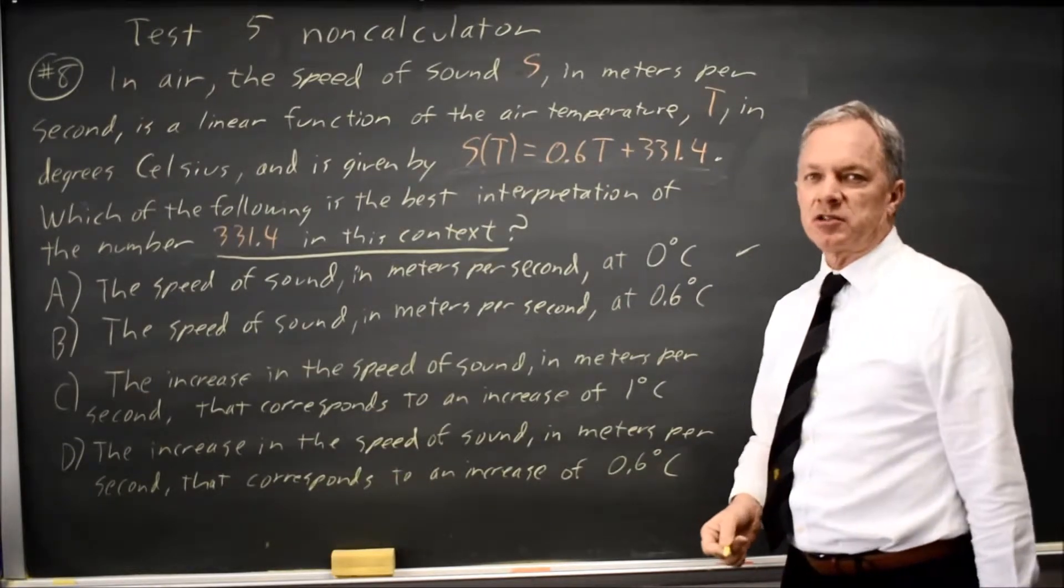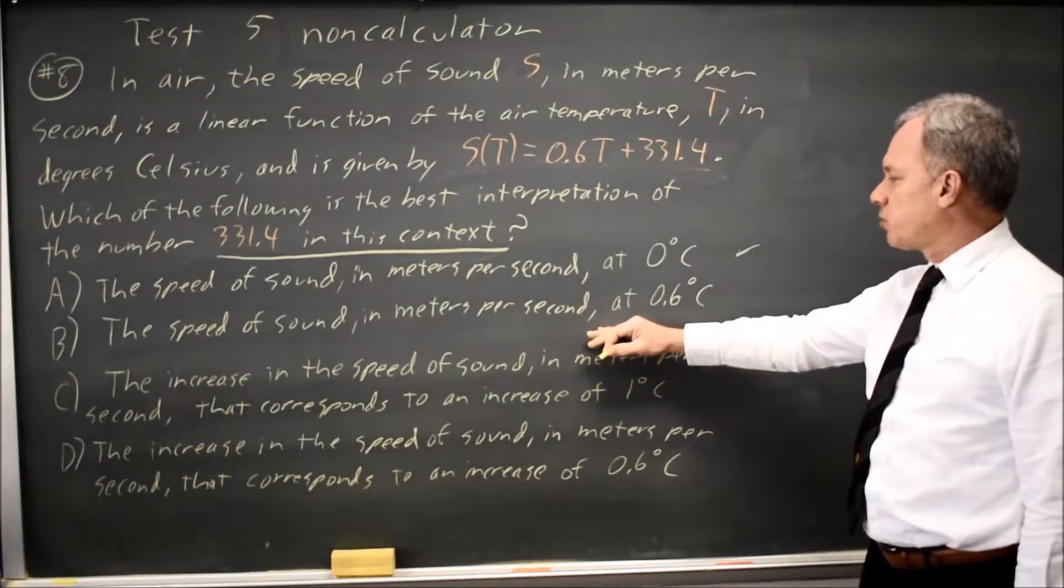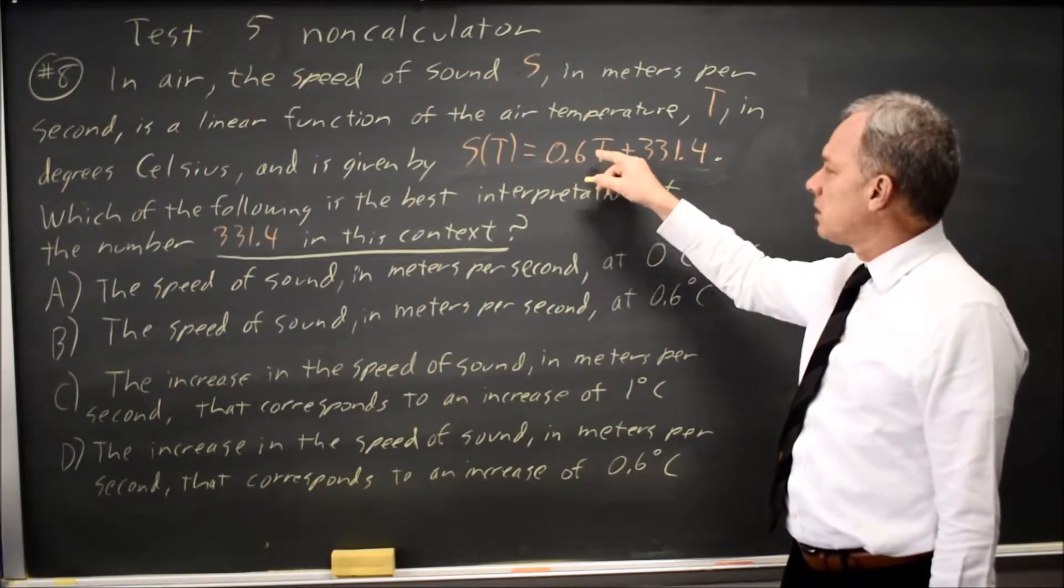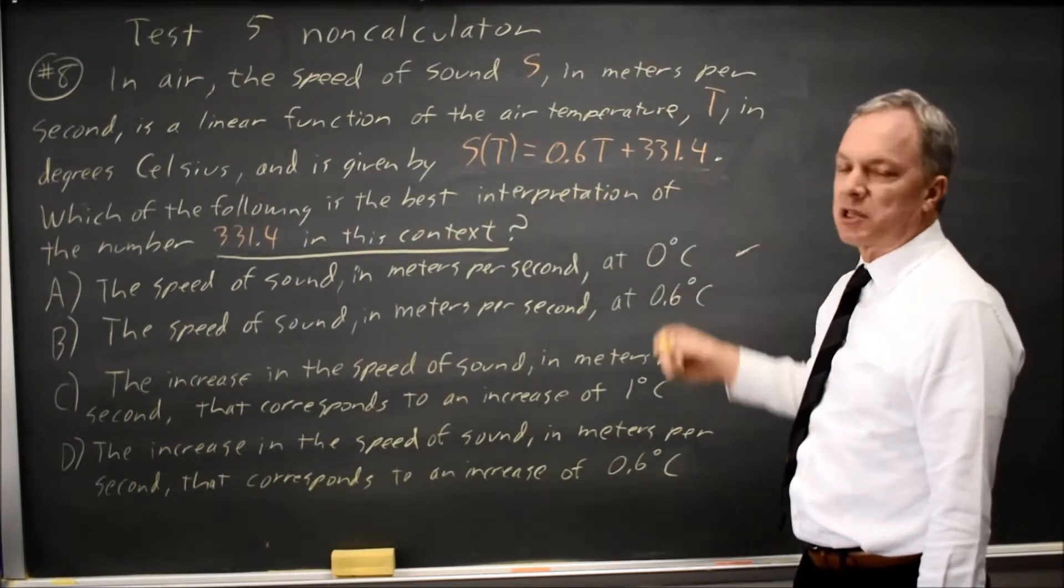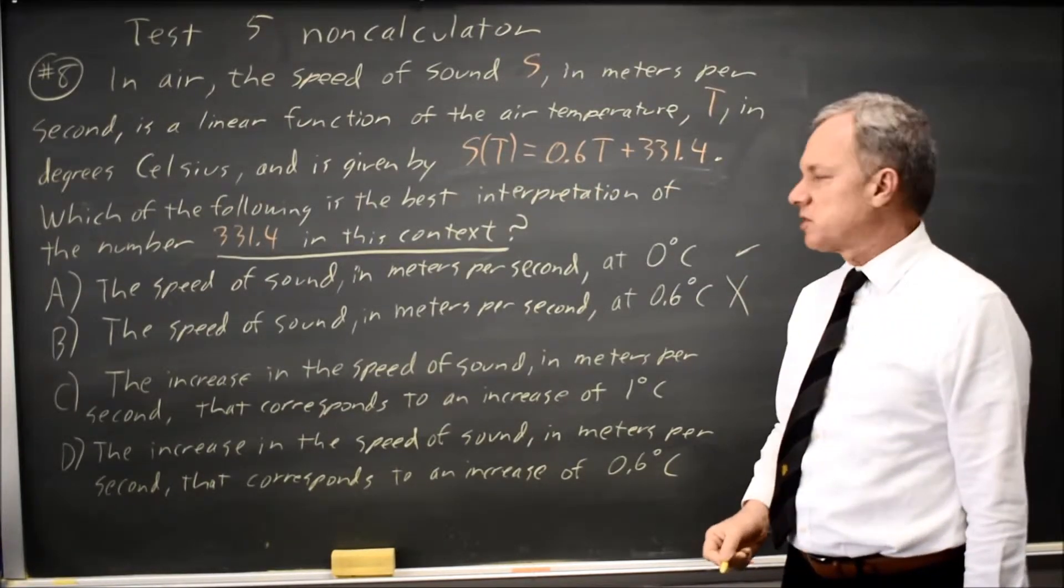I do prefer to read all the answer choices to make sure that there's nothing better. Speed of sound at 0.6 degrees C. No, if I put in T equals 0.6, I get 0.6 times 0.6 is 0.36, and S of T is 0.36 more than 331.4, so this is not quite the speed of sound at 0.6 degrees C.